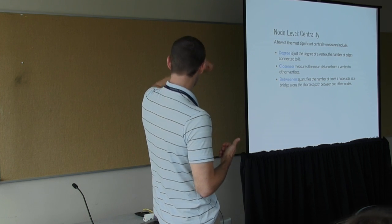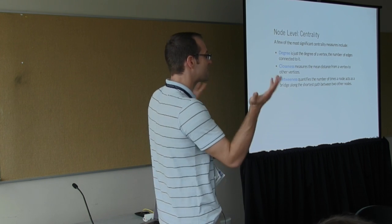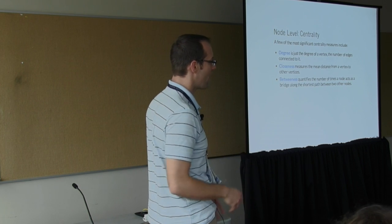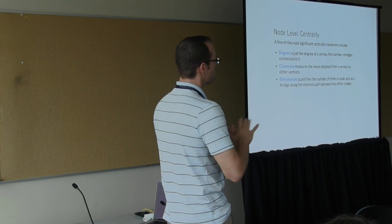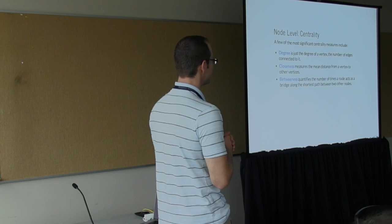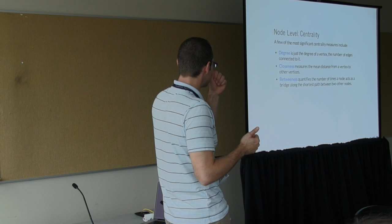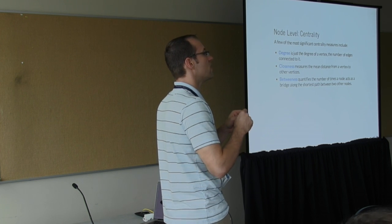The most intuitive one is just degree, right? How many connections do I have? If I have lots of connections, then I'm important. But there are more subtle notions. Just because you're highly connected doesn't necessarily mean that everyone is as available to you. So something like closeness gets closer to that notion. This is the mean distance, the average distance, from a vertex to all the other vertices. If on average I can get a message to most people in the shortest distance, I'm important.